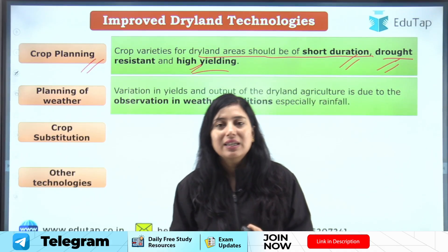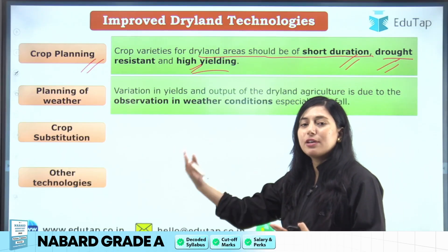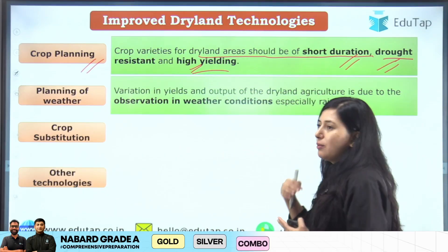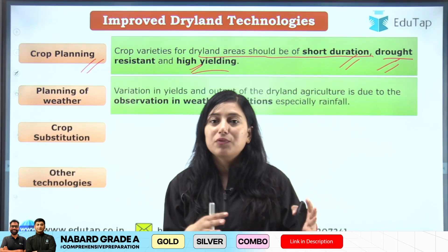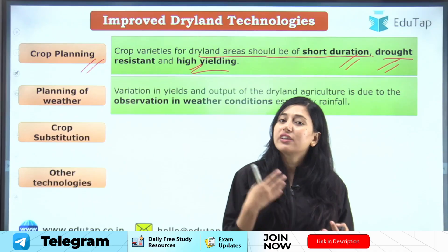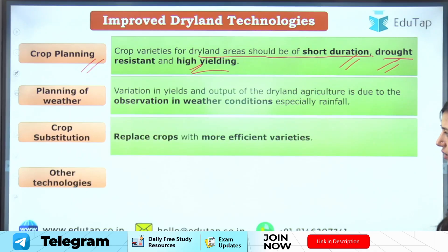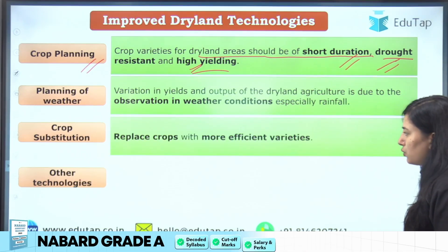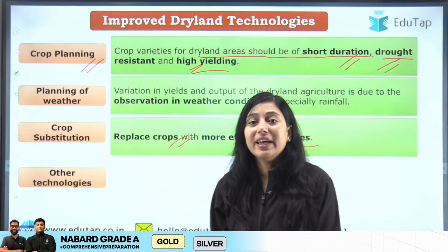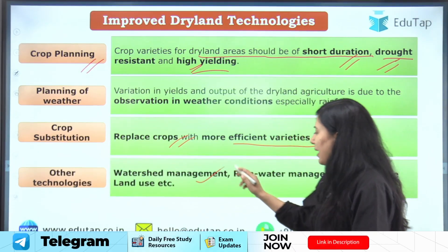The next technique is planning based on weather — we have to study meteorological observations to understand what weather conditions will prevail and plan crops accordingly. If there is enough moisture, we can go for crops that grow well in good moisture conditions; if there is less moisture, we can go for crops like millets that do not require much moisture. Then there is crop substitution, where traditional varieties can be replaced by more efficient high-yielding varieties.